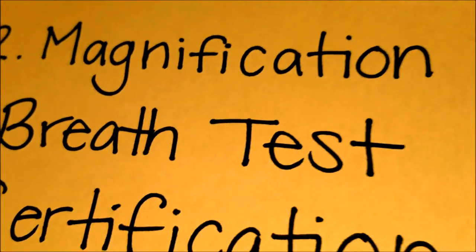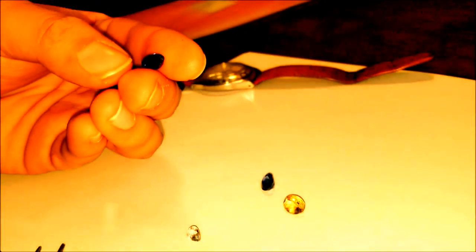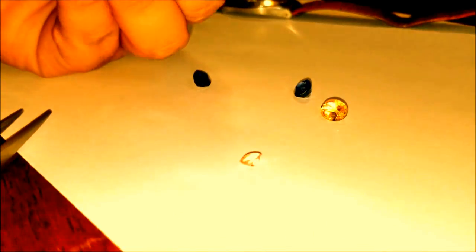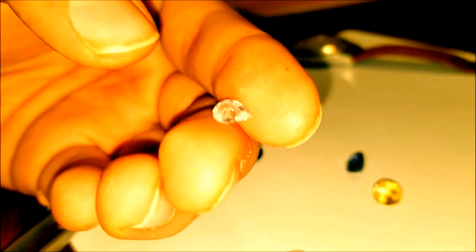Now moving on to the third strategy, the breath test. Now this isn't my favorite test because it's not really that effective. But it works to a certain extent. Now if I blow on this, if I blow on a stone, it'll fog up, obviously. Natural sapphires, the fog disperses very, very quickly.